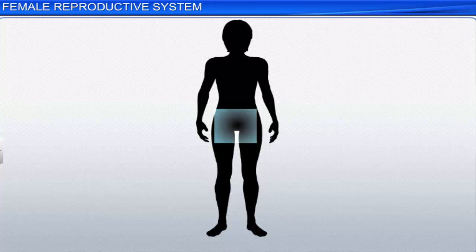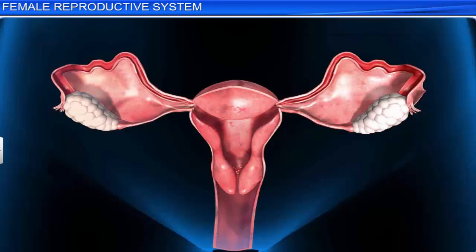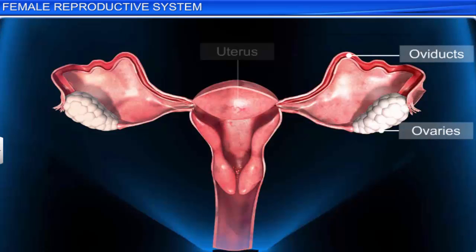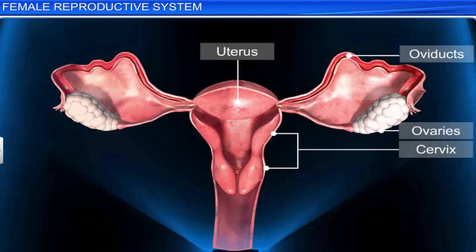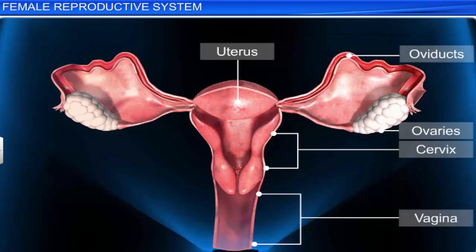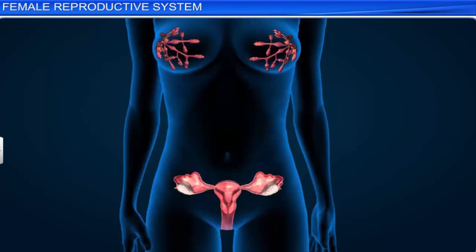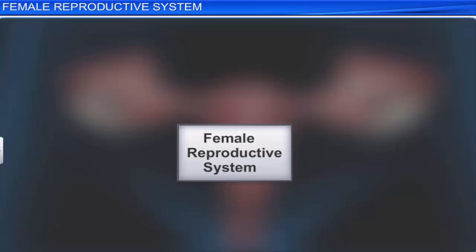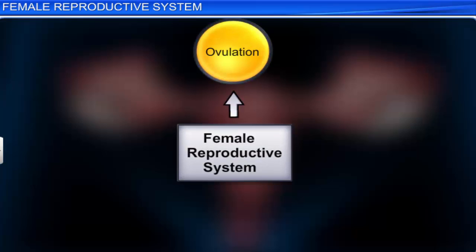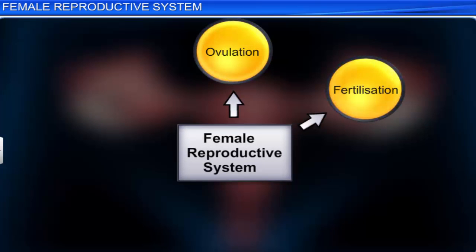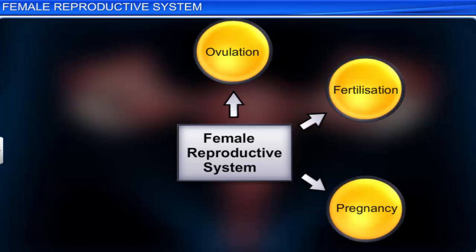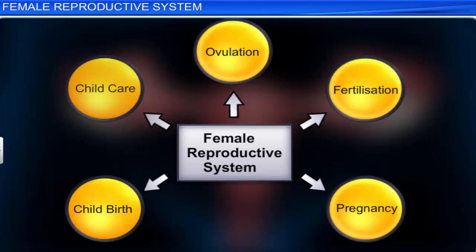The female reproductive system includes the ovaries, oviducts, uterus, cervix, vagina, and the external genitalia, located in the pelvic region. Along with a pair of mammary glands, it supports the process of ovulation, fertilization, pregnancy, childbirth, and child care.